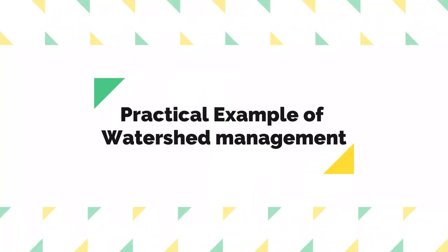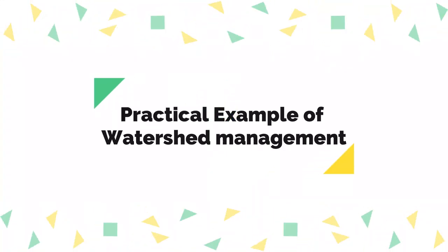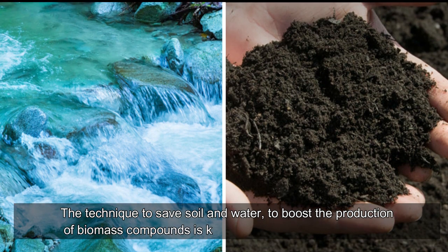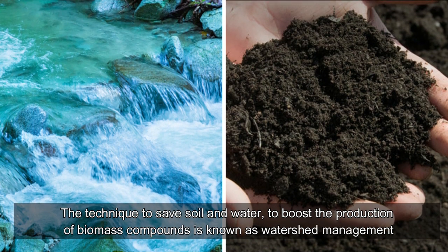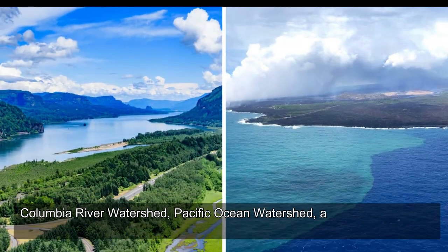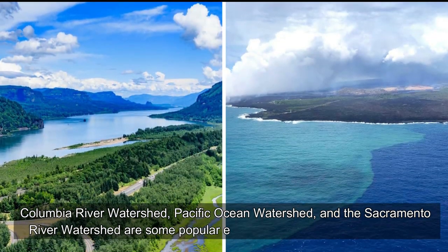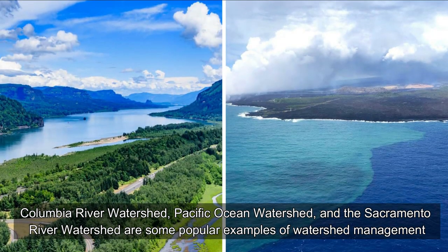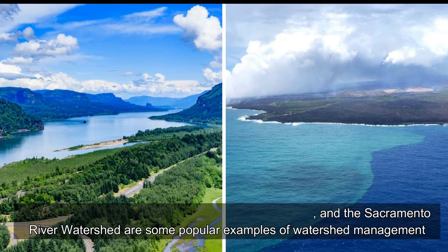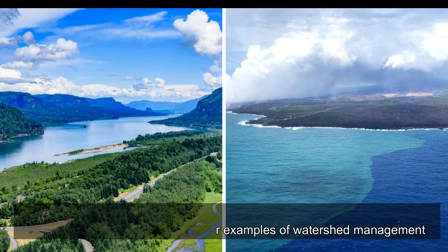Practical example of watershed management. The technique to save soil and water to boost the production of biomass compounds is known as watershed management. The Columbia River watershed, Pacific Ocean watershed, and the Sacramento River watershed are some popular examples of watershed management.